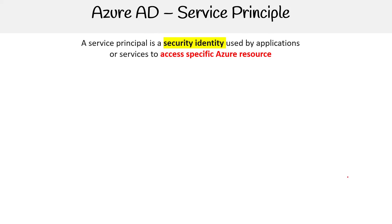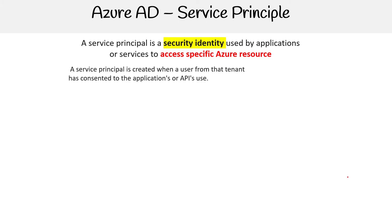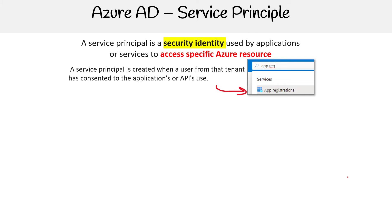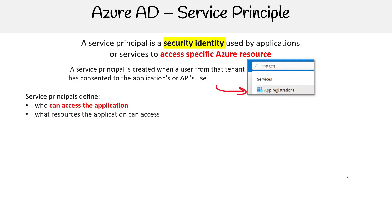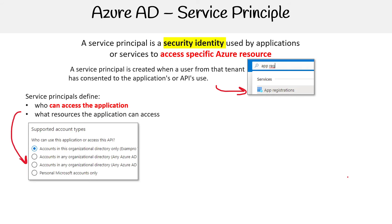Let's take a look at service principals for Azure AD. A service principal is a security identity used by applications or services to access specific Azure resources. It is created when a user from the tenant has consented to the application or API use. You'd go over to App Registrations to set up a service principal, which defines who can access the application and what resources the application can access.